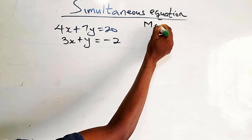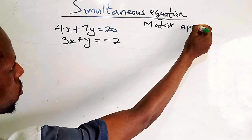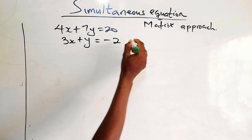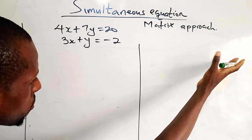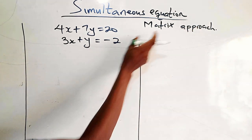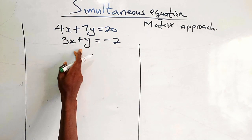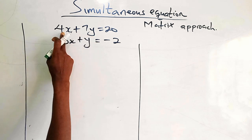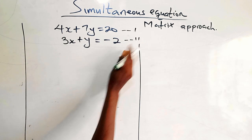We are using the matrix approach to resolve these. We still have the same answer as we approach it with other methods. So let us approach this with the matrix method and how we do this in solving the simultaneous equation to determine the value of x and y. Let's start with the first set of equations — this is equation 1 and equation 2.